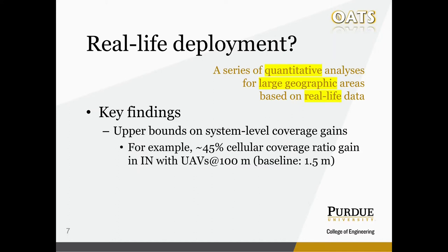It is interesting that there are not many papers to clear things up, especially for real-life drone deployment. So in this project, we carry out a series of quantitative analyses for large geographic areas based on real-life data. The key contribution is that we established, via simulation, quantitative upper bounds on system-level coverage gains. For example, a cellular coverage ratio gain of around 45% can be obtained in Indiana State with data relay UAVs flying at a height of 100 meters, compared to the typical pedestrian 1.5 meter case.